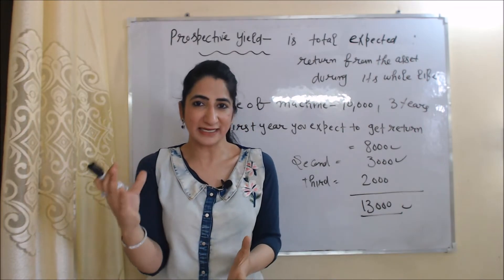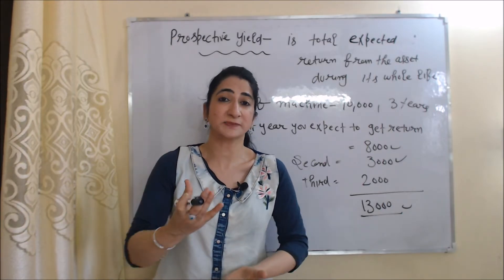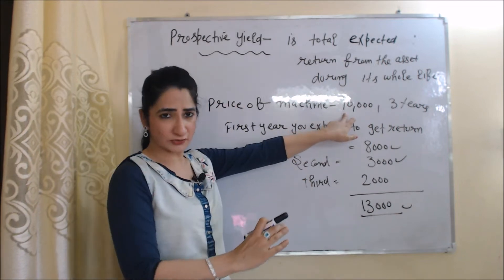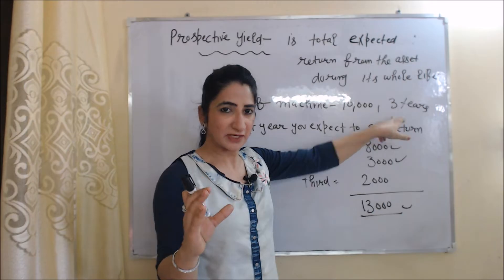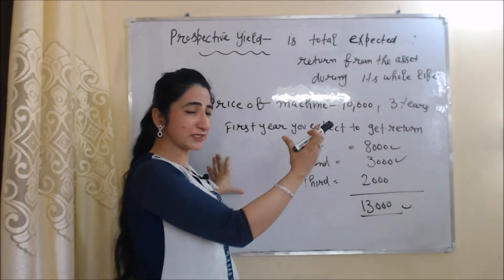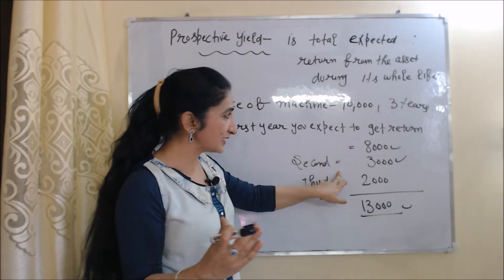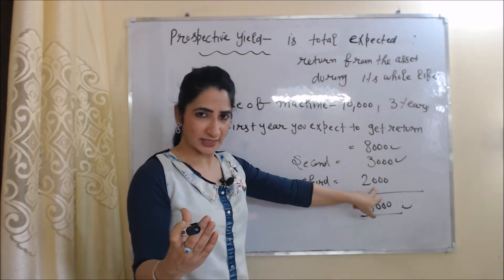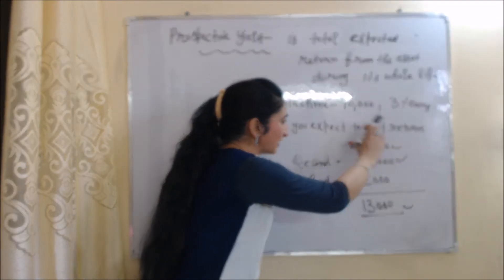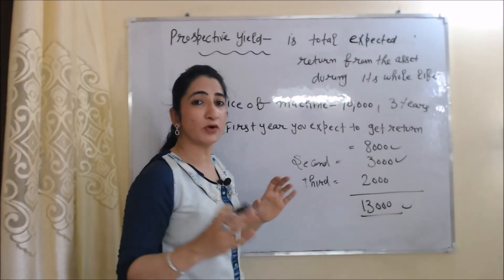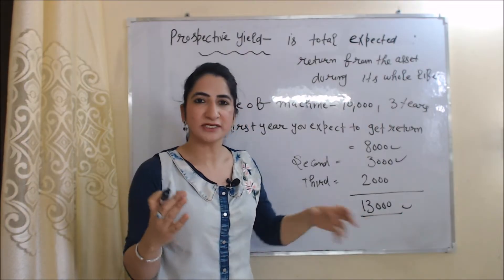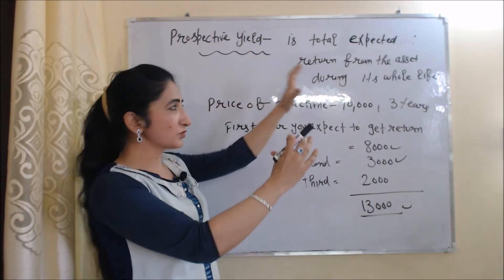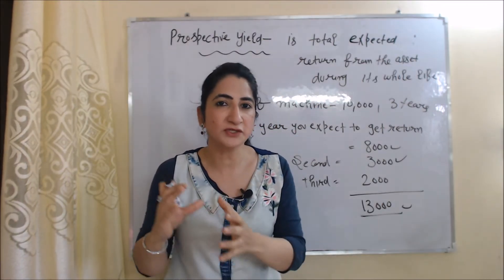Whenever you buy an asset, you expect some income from it. For example, you buy a machine at the rate of 10,000 and the lifespan of the machine is three years. First year you expect to get a return of 8,000, second year 3,000, and third year 2,000. When you add all three years' returns, it will be called prospective yield — meaning 13,000 is your prospective yield from this machine.